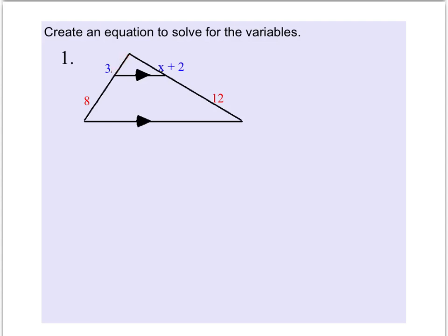So 3 and 8 follow the same proportion as x plus 2 does to 12. So let's set up our ratios. Now our job is to cross multiply. 3 times 12 is equal to 8 times the quantity x plus 2.